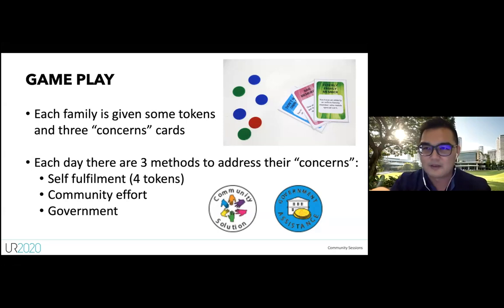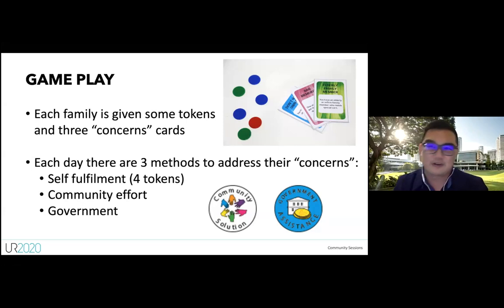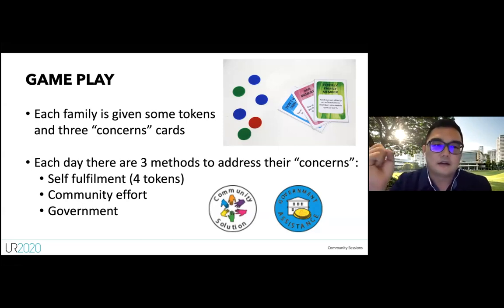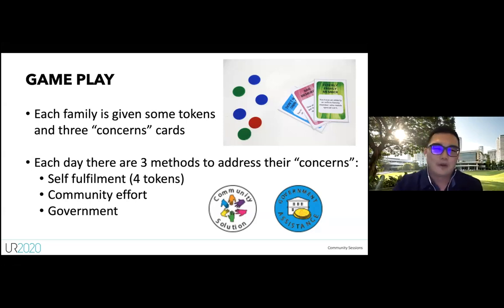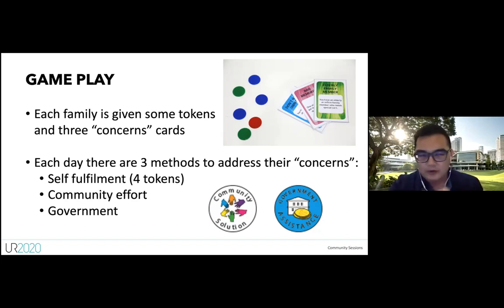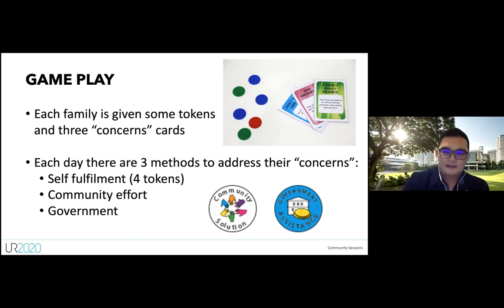In the first round, there's no communication — families discuss only among themselves and decide how many tokens to contribute to the community pool. You can give nothing, one, two, or everything. If the target amount is met, the community solves one issue. Third, the government comes in at the end of each day and randomly resolves one concern for any family that has it.